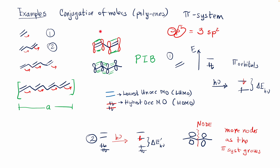For those pi systems, you have conjugated double bonds formed because of sp2 hybridization in your carbons. The idea is that there is one p orbital for each carbon participating in these double bonds, and you can have delocalization of those pi electrons over the entire system.